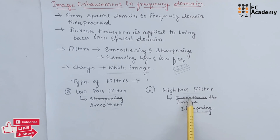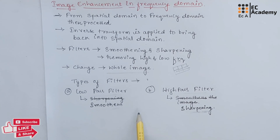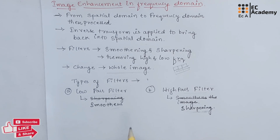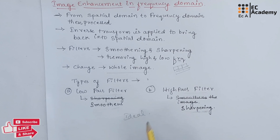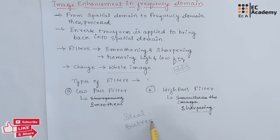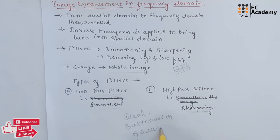Both low pass filter and high pass filter can be classified into three types: the first one is ideal filter, the second one is Butterworth filter, and the third type is Gaussian filter.